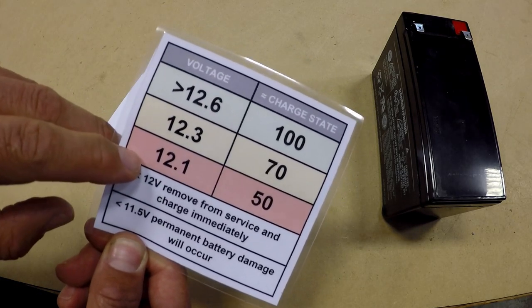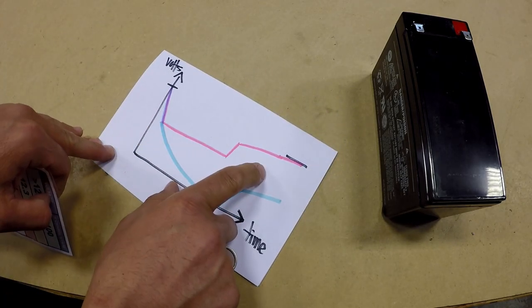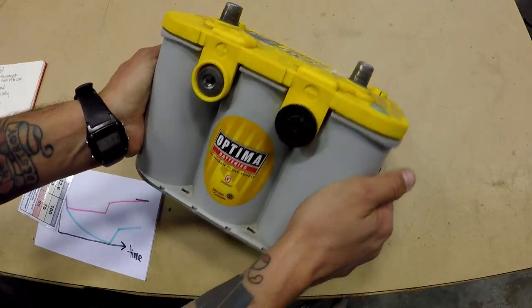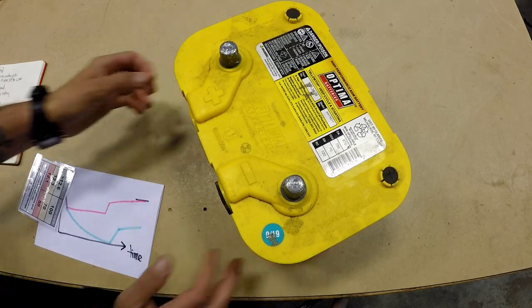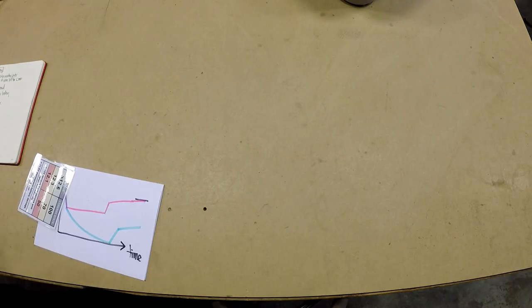Between this voltage chart, to find out what our current charge state is, and this load test curve, we can very easily get an idea of whether or not our 12-volt battery, or our car battery, is up to the task. Okay, I think that's it. I'm turning the camera off.